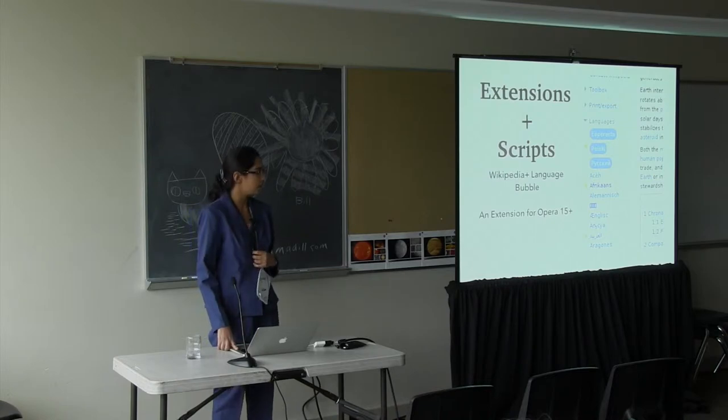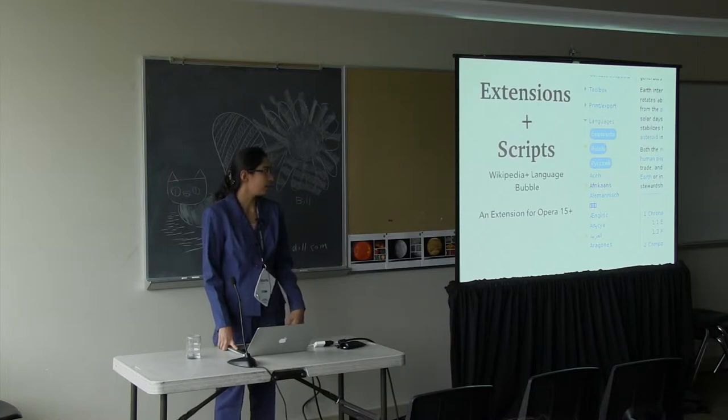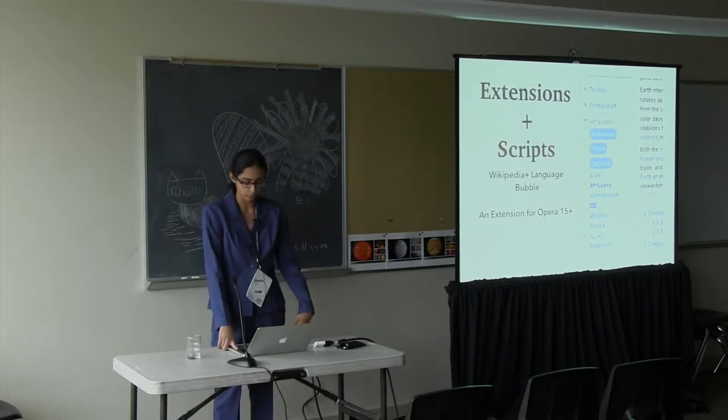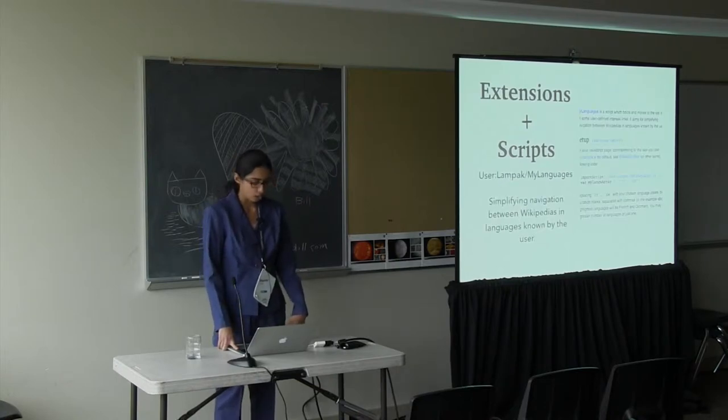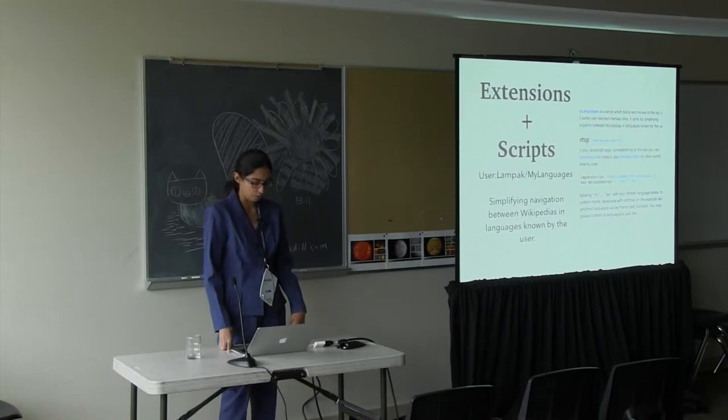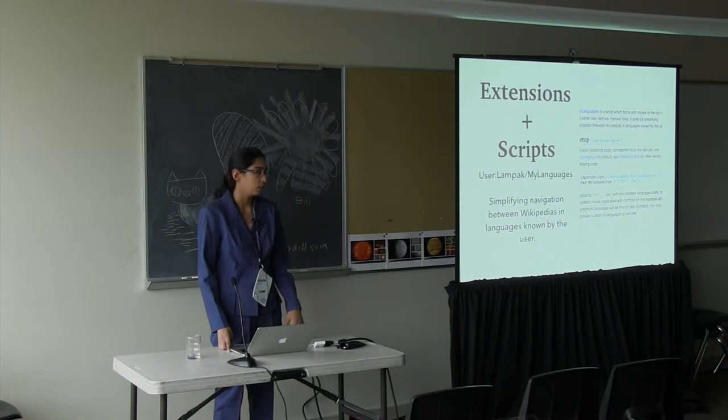The first one is an Opera extension. This Opera extension inputs a small list of languages that you provide, and these languages appear right on top in a highlighted bubble. This is restricted only for Opera users, and the highlighting box seems to be a bad design decision. But besides that, it serves the purpose pretty well. Then we had a user script by user Lupo - My Languages script, simplifying navigation between Wikipedias and languages known by users. This script works in a similar way - you provide an array of language codes, and using JavaScript it hides all the languages that are not in this array.